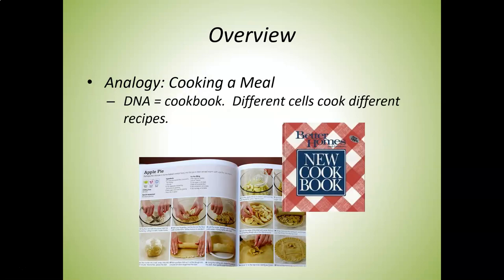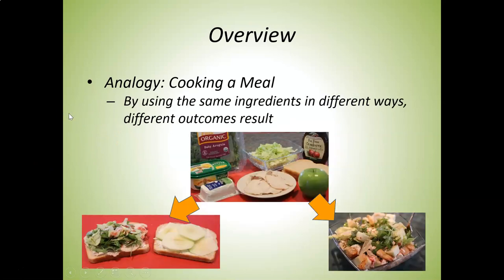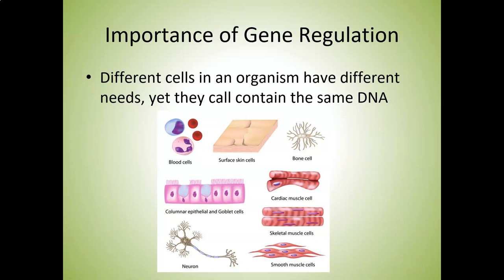Here's an analogy: you have a recipe book, otherwise known as a cookbook, and different cells can cook different recipes. That's analogous to our genes. All of our cells have the same DNA, but different things happen in different cells — some develop into blood cells, some into skin cells, some into bone cells. The question is why that happens if genetically they're the same. It's about regulating the expression of different genes in different cell types.